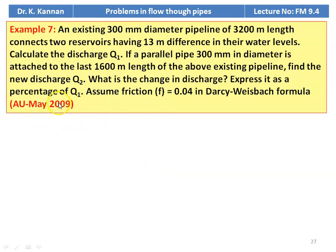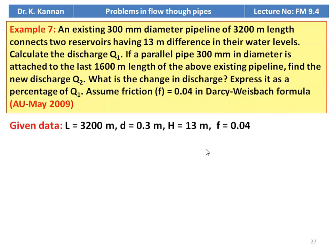Example number 7 from May 2009 question paper. An existing 300 millimeter diameter pipeline of 3200 meter length connects two reservoirs having 13 meter difference in their water level. Calculate the discharge Q1. If a parallel pipe of 300 millimeter diameter is attached to the last 1600 meter of the existing pipeline, find the new discharge Q2. What is the change in discharge? Express it as a percentage of Q1. Assume friction factor 0.04 in Darcy-Weisbach formula.